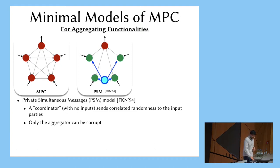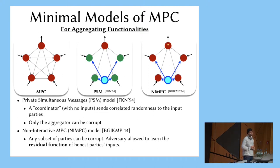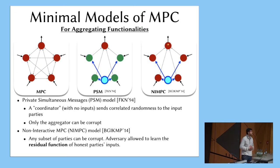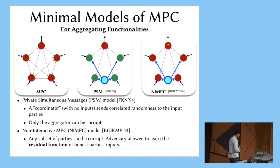They also require security only against corruption of the output party, so none of the input parties can be corrupted. More recently, Amos and his co-authors introduced another model called NIMPC, where they do allow all parties to be corrupt — any subset of parties could be corrupt. But they make another restriction on security: the adversary is allowed to learn not just the output of the function, but the residual function of the inputs of the honest players. That is, the adversary is allowed to learn the output of the function on all possible settings of the corrupt parties' inputs, with the inputs of the honest players fixed.